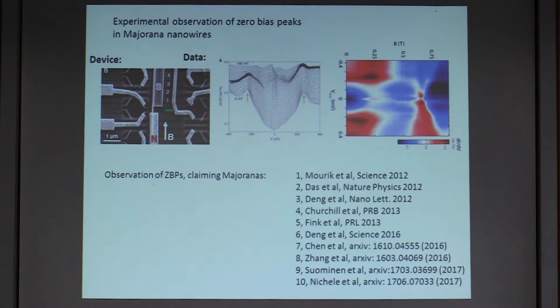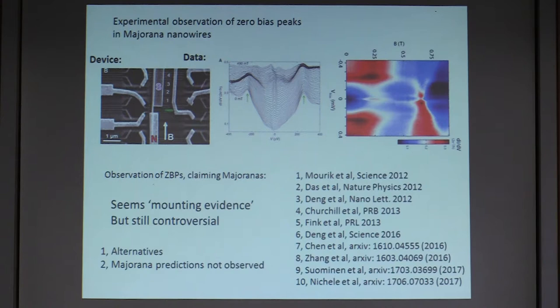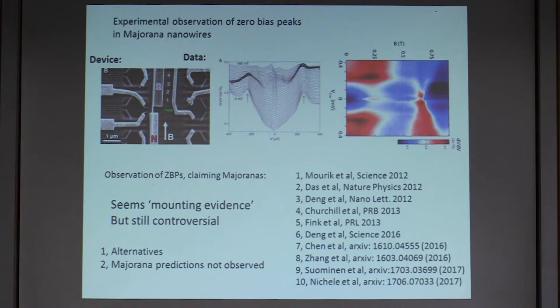Right after the Delft work, there were many papers in this field — at least ten papers — observing zero-bias peaks in semiconductor nanowires and claiming Majoranas. But looking at the details, this Majorana field is still quite controversial. There are many alternatives that can give you zero-bias peaks which are not Majoranas but are also present in the system. Most importantly, the Majorana predictions are not fully observed — for example, the Majorana zero-bias peak height should be quantized, but the height here is only 5% of the predicted value. This is a huge discrepancy.